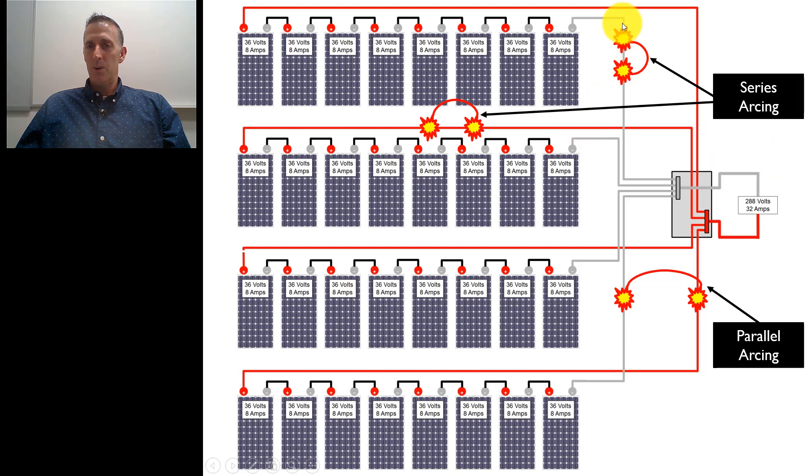Whether it's on the negative conductor or positive conductor, once the electrons stop flowing into the combiner box and out to the inverter, once the inverter detects it and shuts it down, current no longer flows and the arc stops.